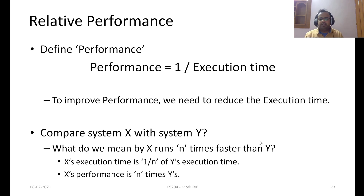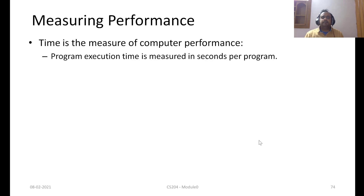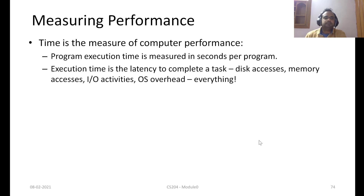Another way of putting it: X's performance is n times Y's — meaning X was 10 times faster than Y. Now how do we measure? We already defined performance as 1 upon execution time. Time is the measure for computer performance, typically measured as seconds per program. That is too coarse-grained — we are going to look at a much finer way of measuring performance.